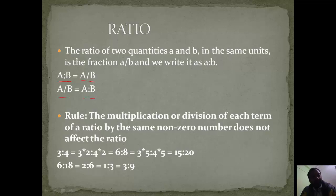Suppose the ratio is given as 3 is to 4. If we have to multiply it by any number, we must multiply both digits in the ratio by the same number — like 3×2 is to 4×2, or 3×5 is to 4×5; these all will be equal. Similarly, if we want to divide, we divide by the same number: 6÷3 is to 18÷3 gives 2 is to 6; 6÷6 is to 18÷6 gives 1 is to 3; 6÷2 is to 18÷2 gives 3 is to 9. All these ratios are the same — their value will always be equal.